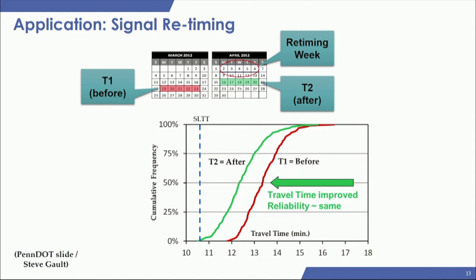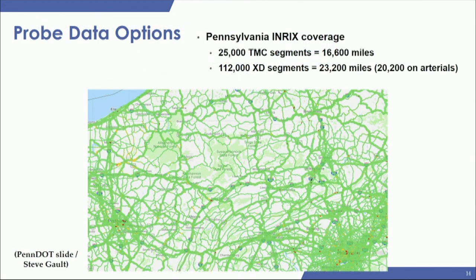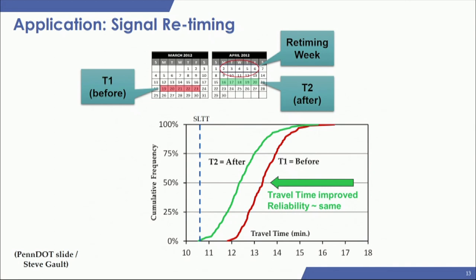A practical application is a before-and-after study for signal retiming. T1 is your baseline, and after a retiming week you do an after-action review. In this example, the T2 curve is shifted to the left, meaning congestion severity has decreased due to signal retiming. The slope of the curves is about the same, so reliability did not improve, but congestion severity did — that would be the key takeaway.